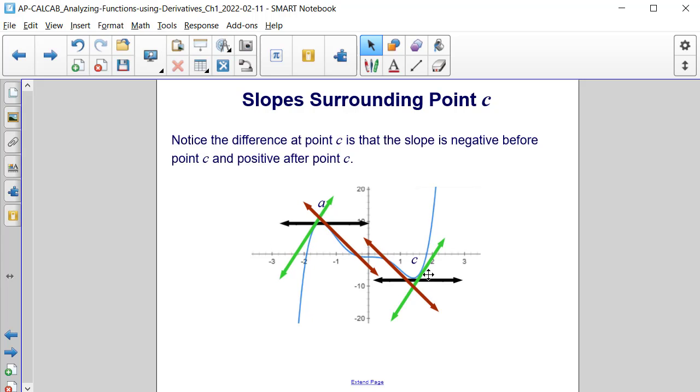Notice the difference at point C. We have a slope that's negative before point C. It's zero at point C. But then it's positive after point C.